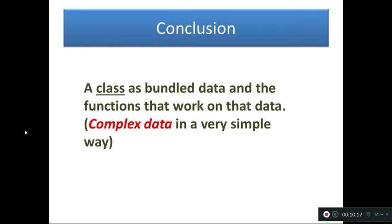This lesson conclusion: a class has bundled data and the functions that work on the data. Complex data — very simply, class means bundled data. In first year you learned data content with 3 parts: int, float, char. In Python, don't worry — a class has bundled data and the functions that work on that data. A simple example of complex data: if you deal with a quadratic equation, complex data can be given.